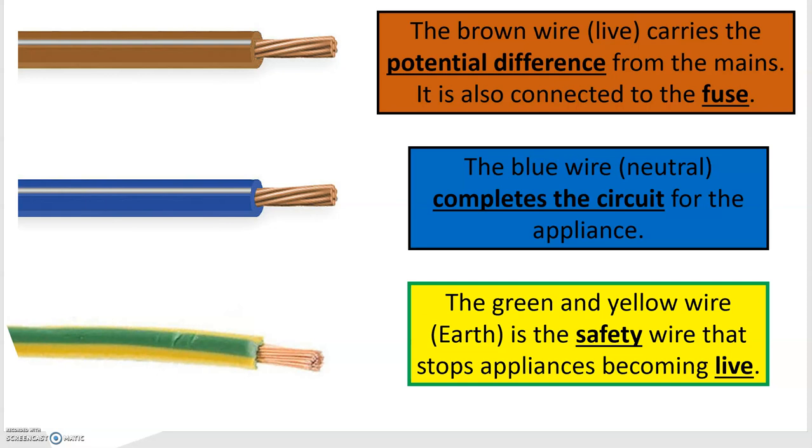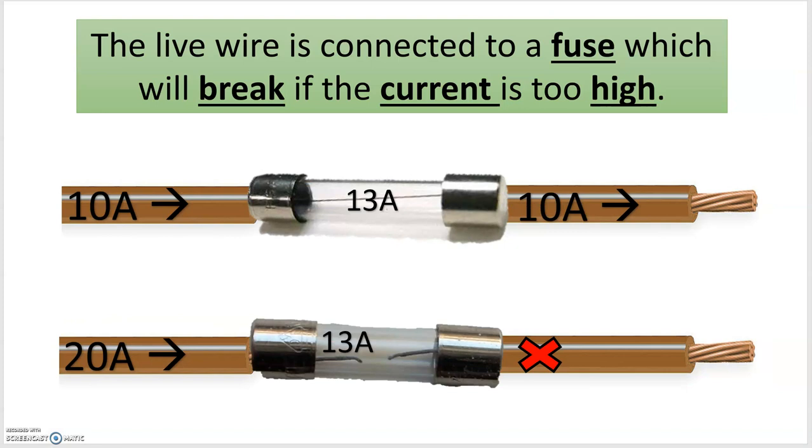Now how do we stop appliances catching fire? In the plug you also have something called a fuse. The live wire is connected to a fuse which will break if the current is too high.